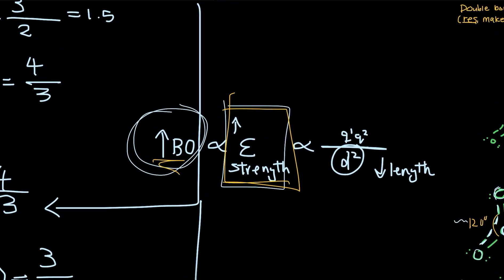So bond order is a measure of bond strength. And bond strength, which we can also call the electrostatic force, is proportional to this equation, where there's charge divided by distance.